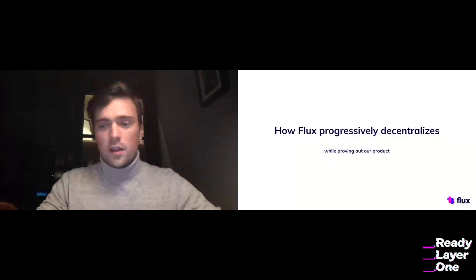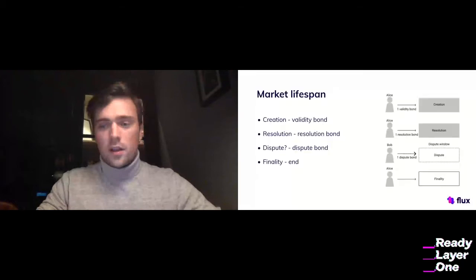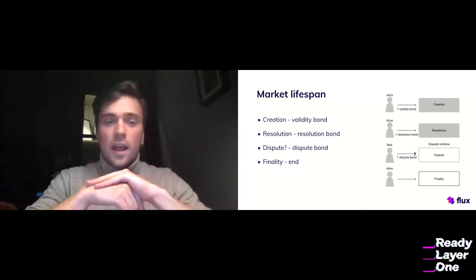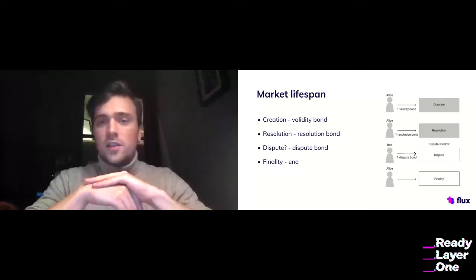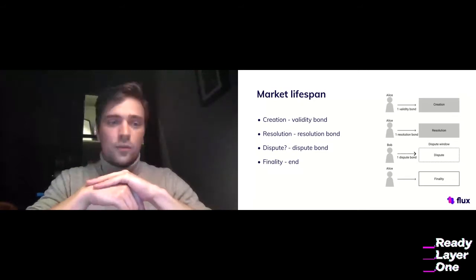Before we get into this, what does a market look like? The lifespan of a market starts with creation, then comes resolution — what was the outcome of the market — then there's an optional dispute during a dispute window. In the end there's finality. When finality is reached, it's irreversible. The outcome provided at finality is the final outcome, and the funds can be distributed and claimed by users after market finality.